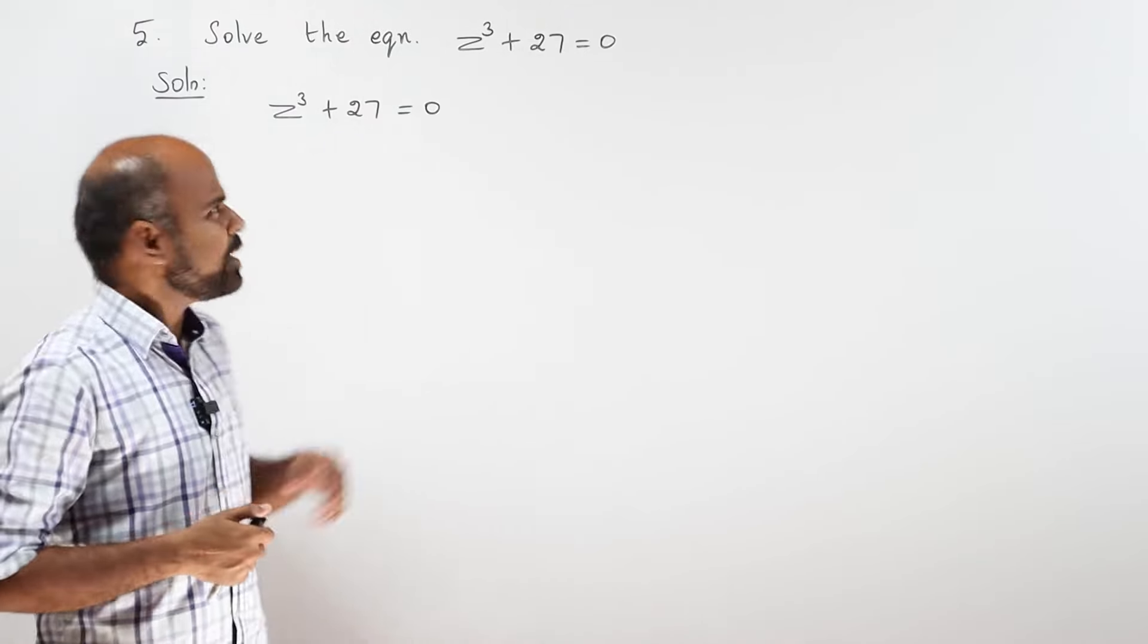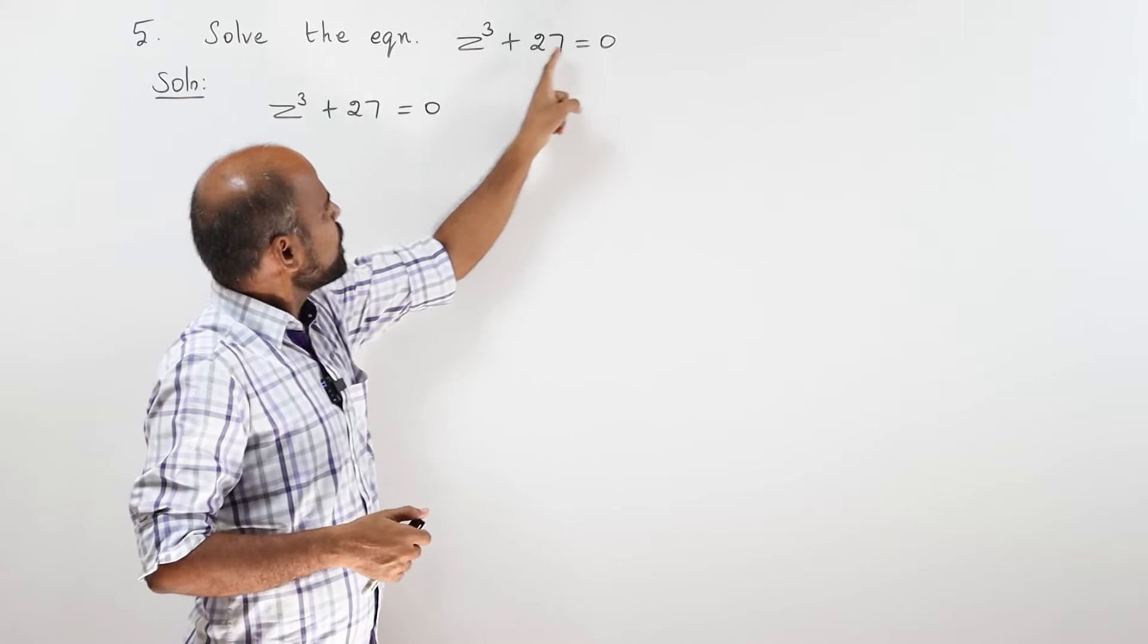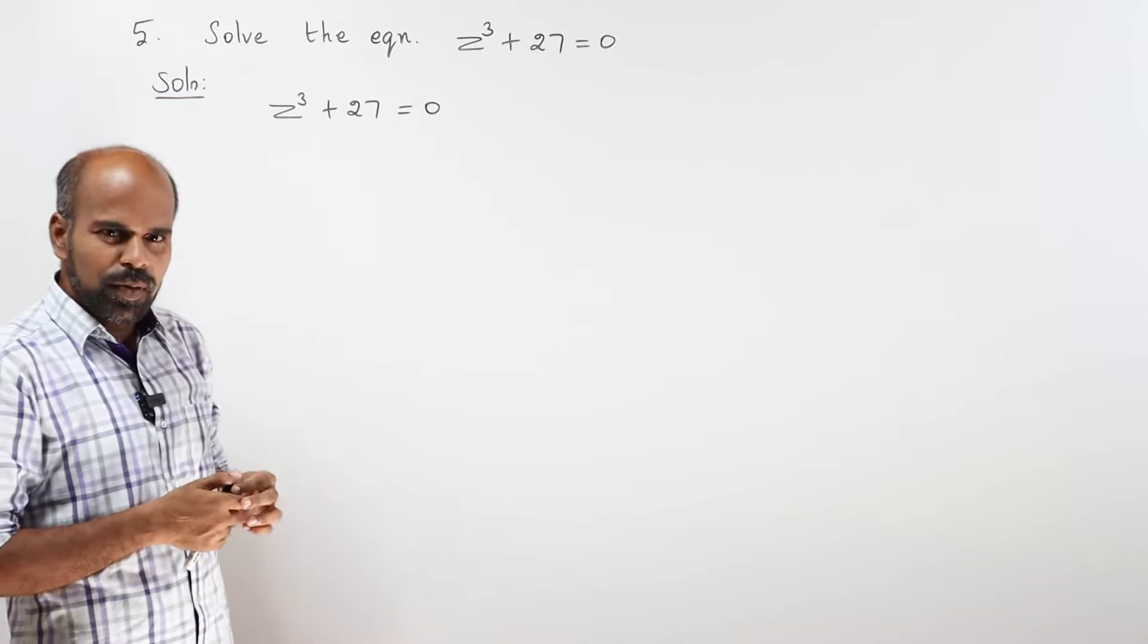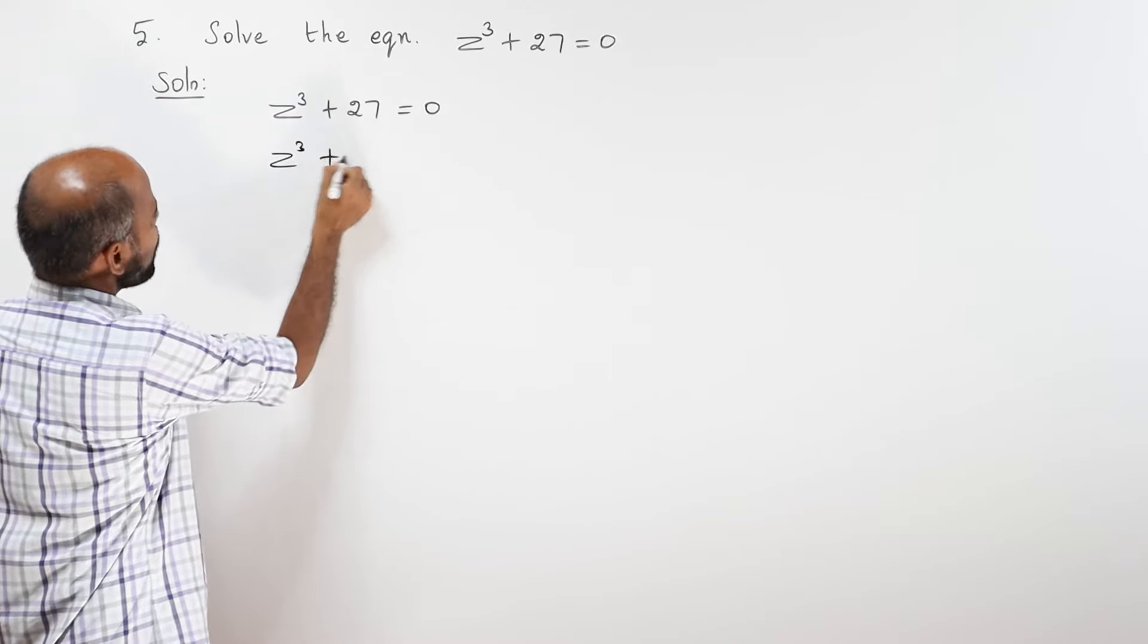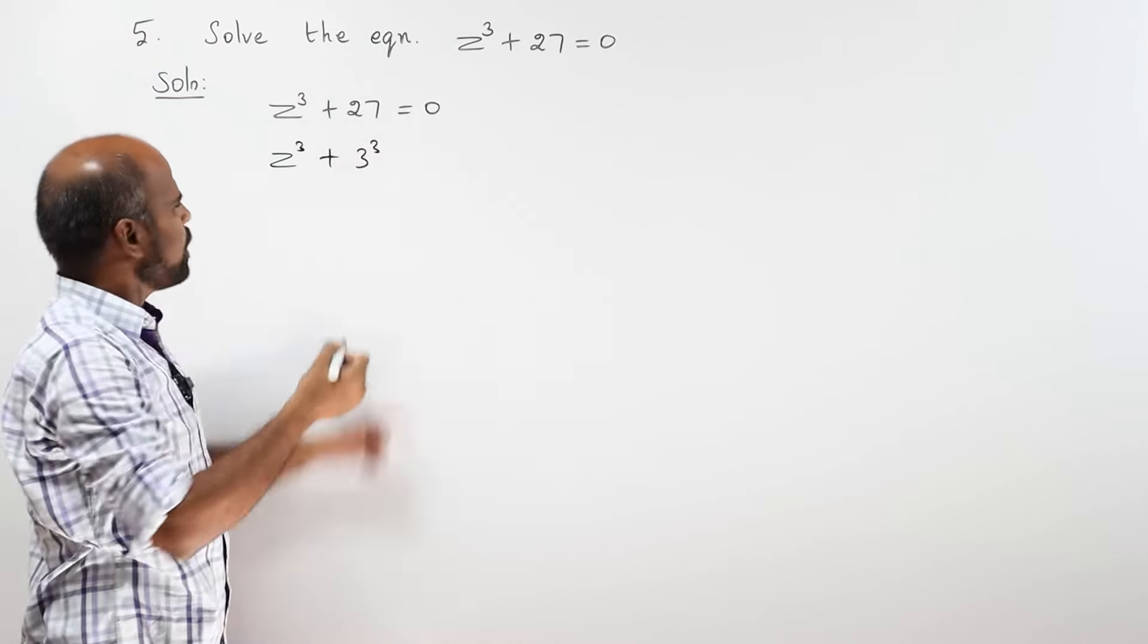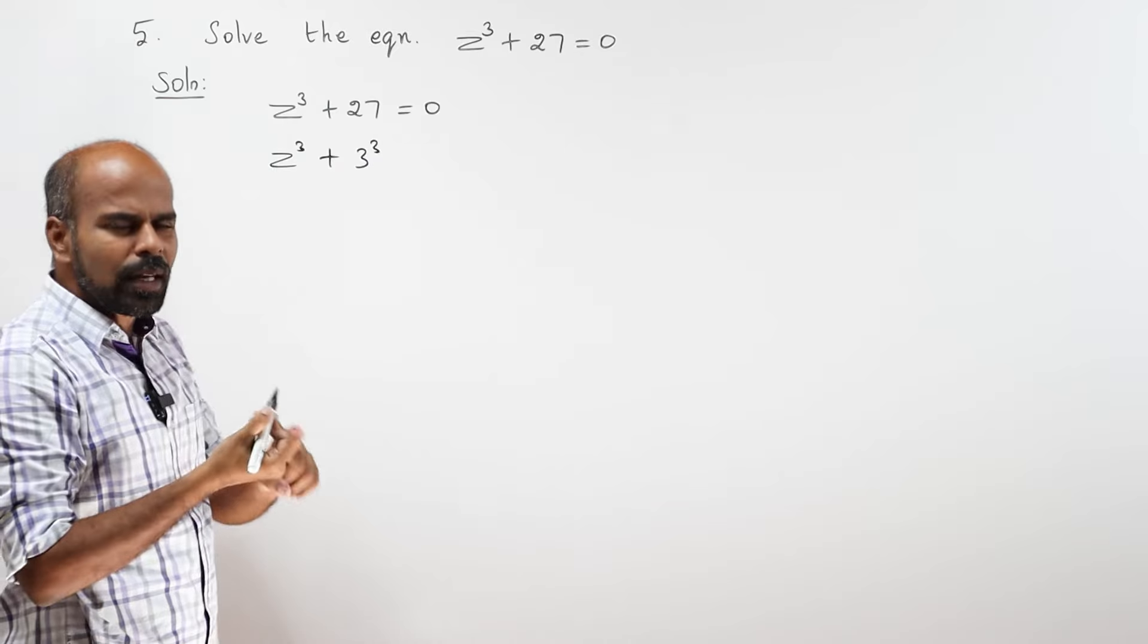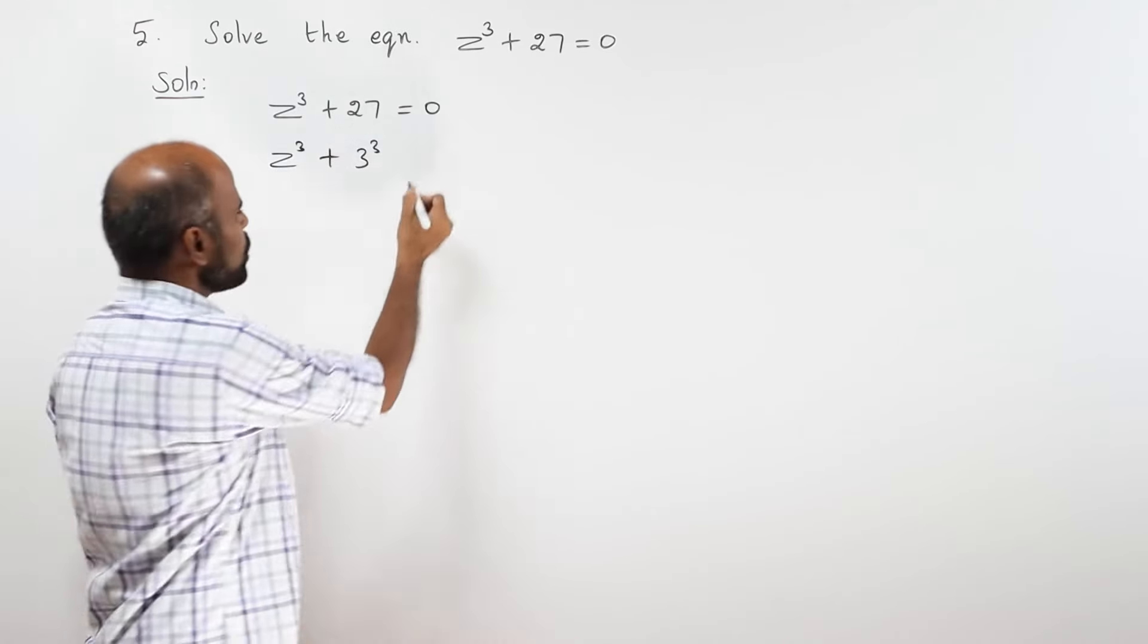Hello students. Let us see the fifth question. Solve the equation z cube plus 27 equal to 0. z cube plus 27 is nothing but 3 cube. 3 times modulate 3 into 3 into 3, 27. Z cube plus 27 equal to 0.